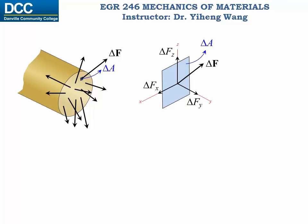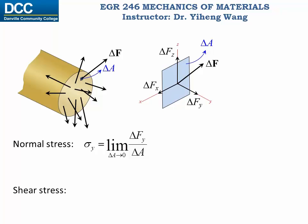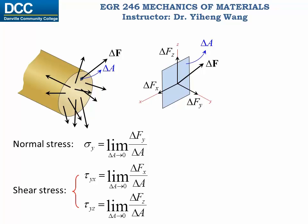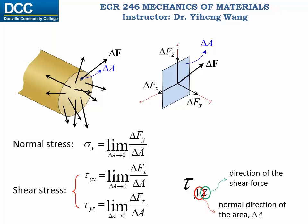The force component along the y direction is the normal force, and the x and z components are shear forces. When this area delta A approaches zero, the area becomes a point and the normal stress sigma at this point is defined as delta Fy over delta A. The shear stresses tau at this point are defined as the force components along the x and z directions over delta A, respectively. Note that the shear stress has two subscripts.